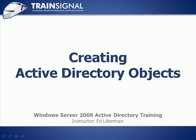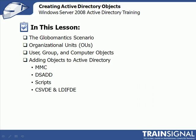Welcome to TrainSignal. You're watching a lesson about creating Active Directory objects. In this lesson, we're going to start off by talking about what's going on in GlobalMantics and why we need to create some Active Directory objects for them. Then we'll review organizational units, which we talked about in a previous lesson, and three other types of objects: users, groups, and computers. Then we're going to actually add the objects into Active Directory, and I'll show you four different ways to do it.